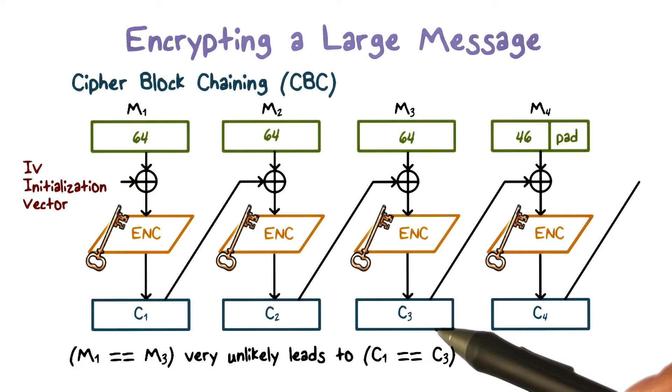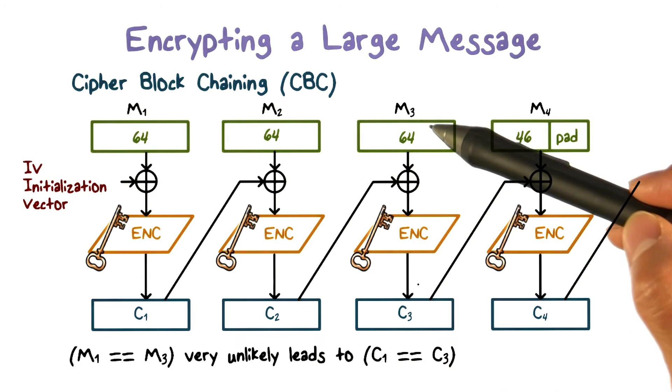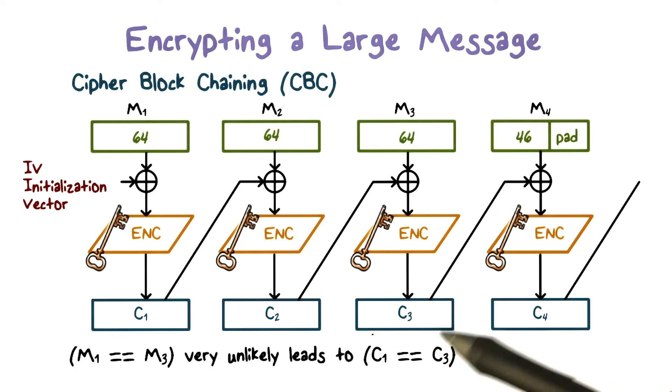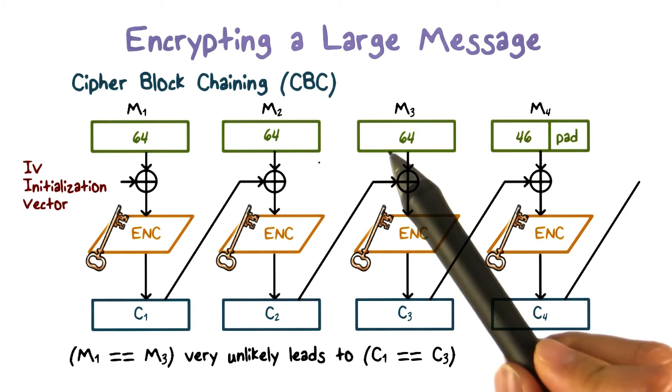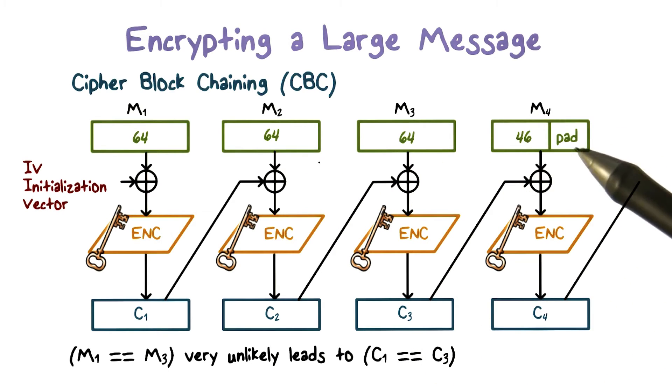In other words, in code analysis, it is very hard to figure out the plaintext block just by looking at the current ciphertext block. More importantly, if two plaintext blocks are exactly the same, meaning they repeat in the same message or in two different messages, the ciphertext blocks are not likely to be the same.